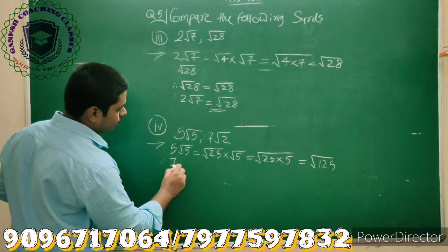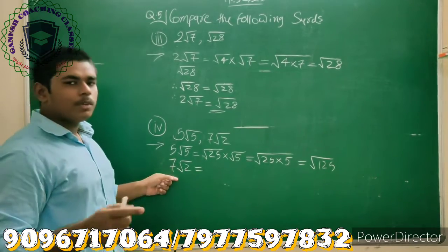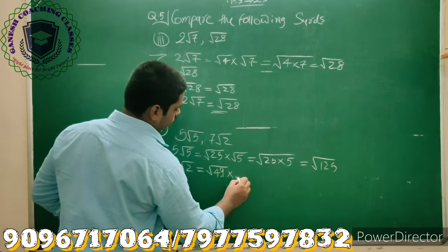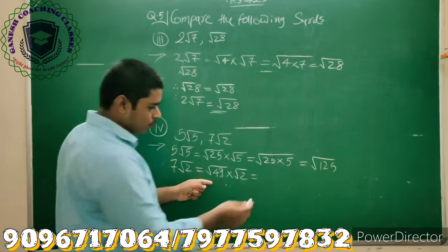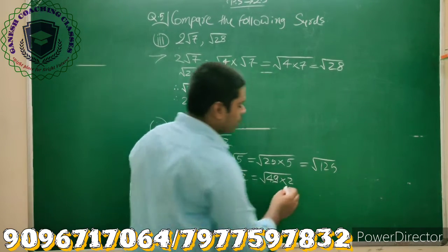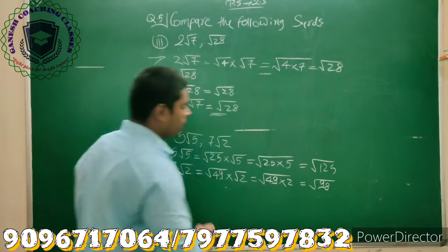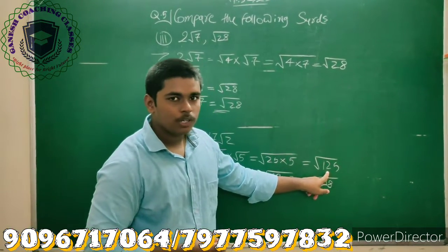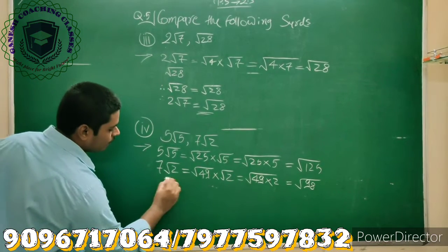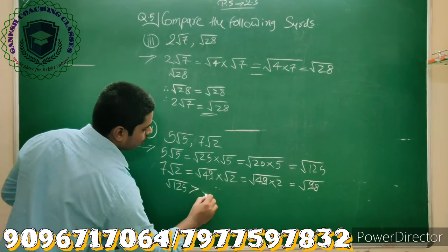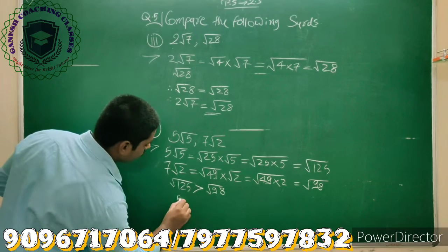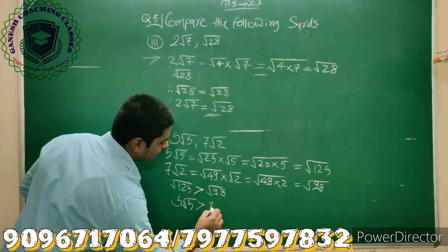For the second surd, 7√2: 7 can be written as √49. So we get √49 × √2, and combining them gives √(49×2) = √98. Now, which is greater, 125 or 98? Clearly, 125 is greater than 98. So √125 > √98, meaning 5√5 is greater than 7√2.